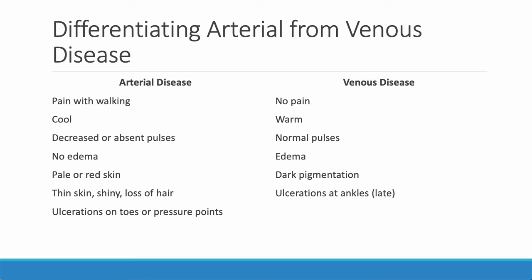With venous disease, you get good circulation — blood flow reaches the distal extremity well. But because of some obstruction to flow, frequently obesity, there is an impediment to blood returning to the heart, so it stays in the distal extremities. The presentation is painless, warm, with normal pulses, edematous limbs, and dark pigmentation. Late in the disease, you can have painless ulcerations at the medial or lateral aspect of the ankles.